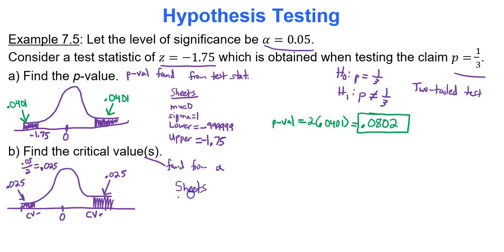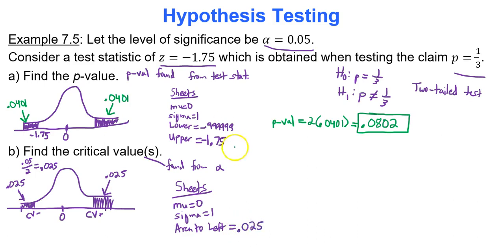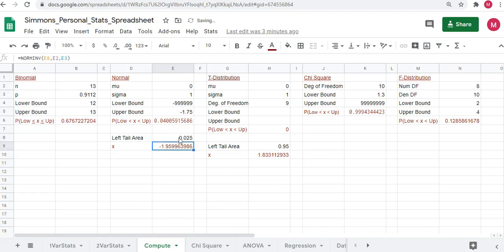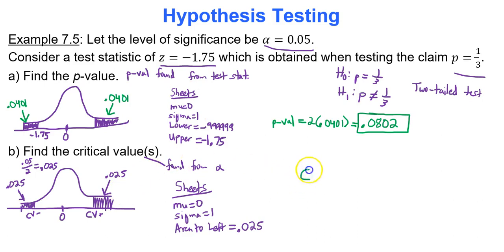To find the negative critical value, go to Google Sheets — mu is 0, sigma is 1, and the area to the left for the negative critical value is 0.025. Type those three things into Google Sheets: 0, 1, and left-tailed area 0.025. You get about negative 1.96. So my negative critical value is negative 1.96.